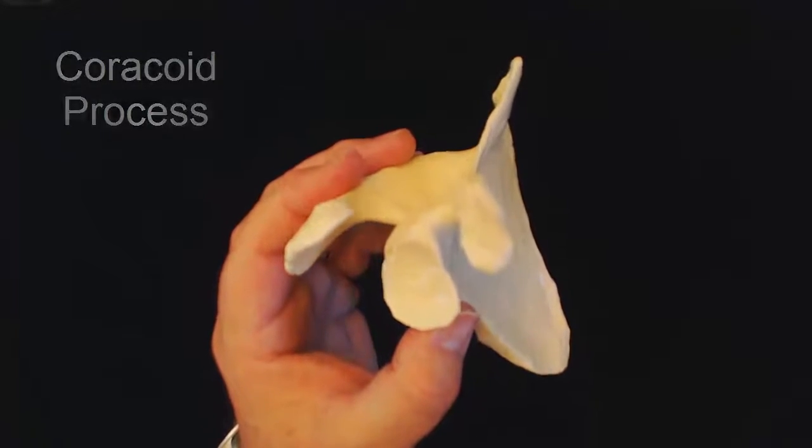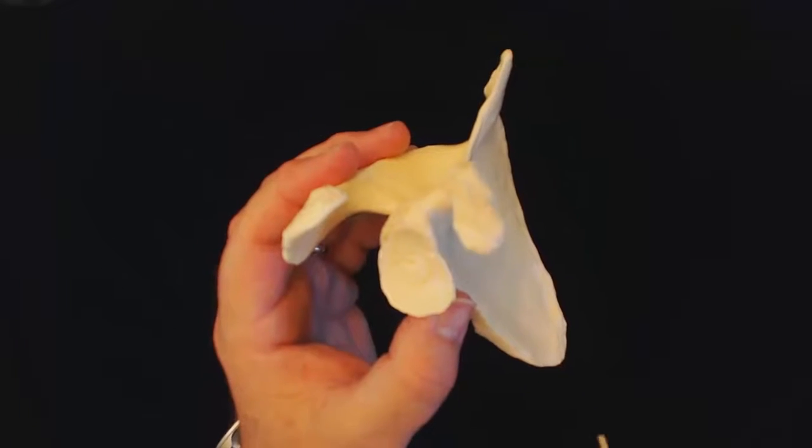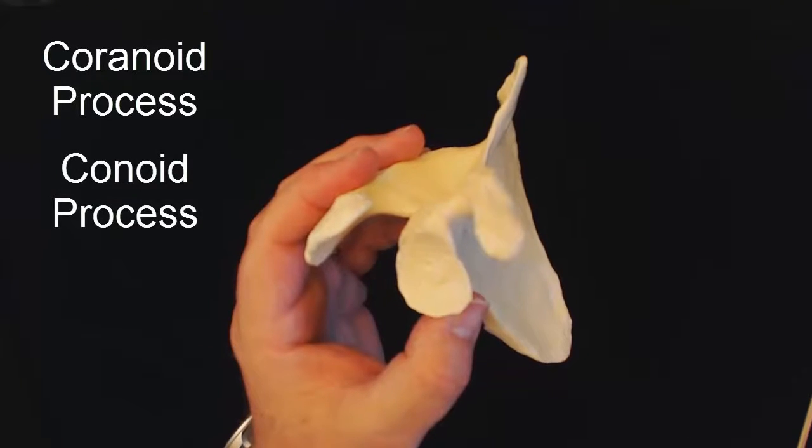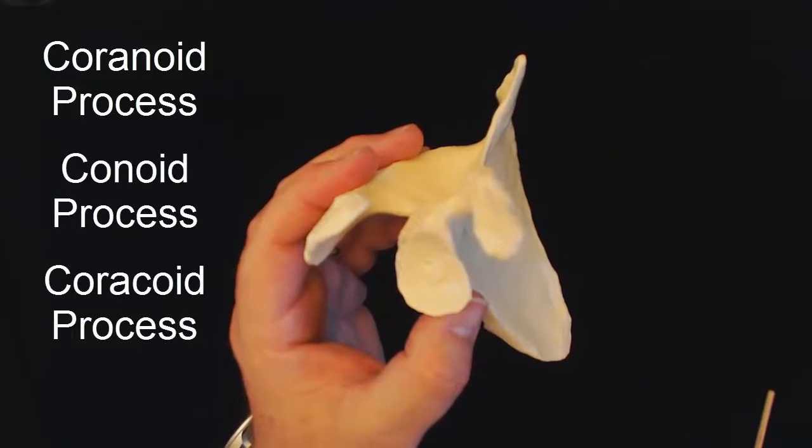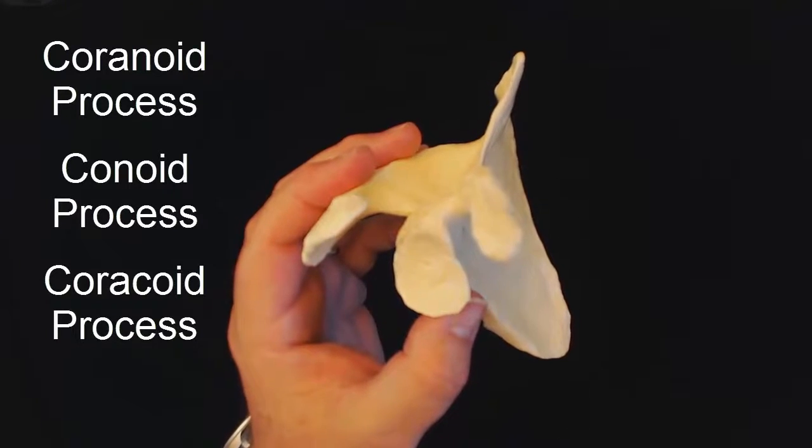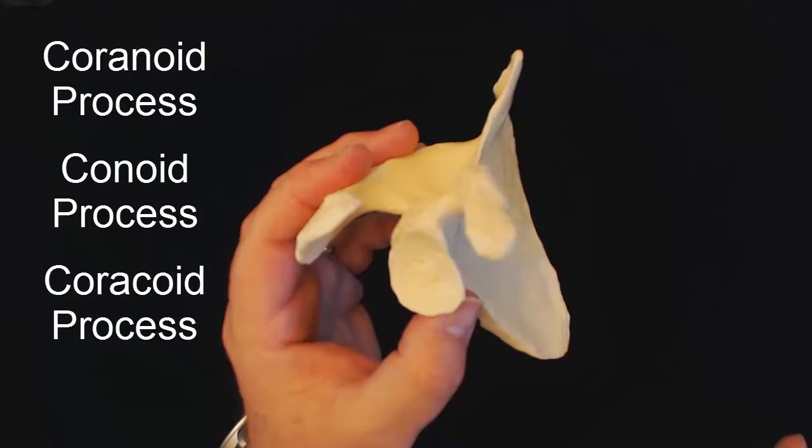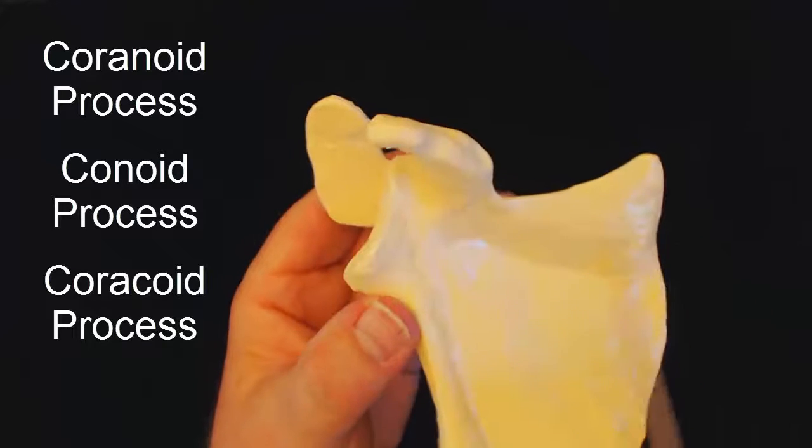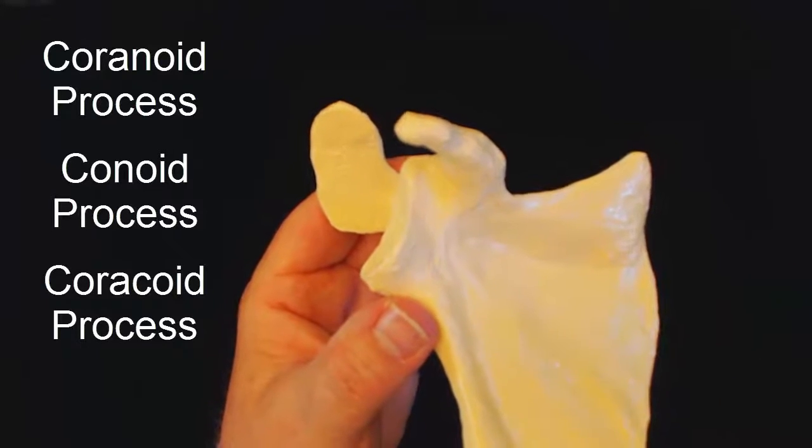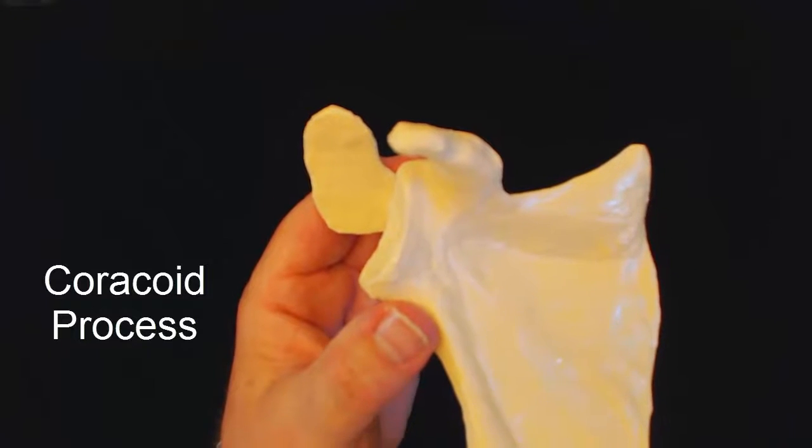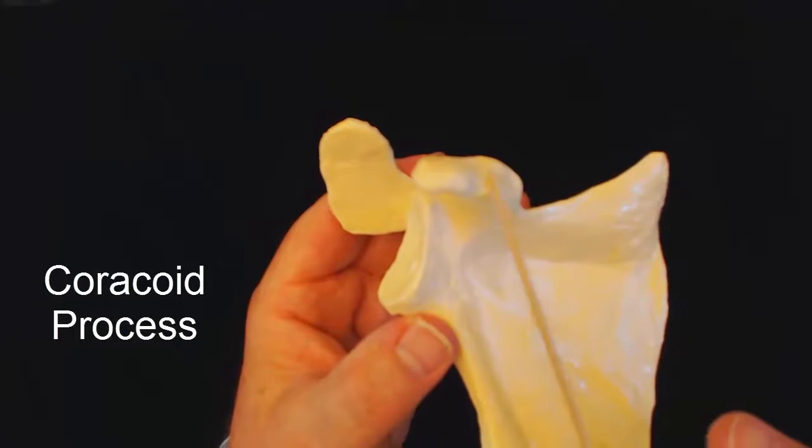And the reason that's important is because in the skeleton, we have a coronoid process, a conoid process, and a coracoid process. So that can get pretty confusing. And so that's why I think of this as a cobra, and we have two scapulas, so it has two C's in it. So, C-C for coracoid.